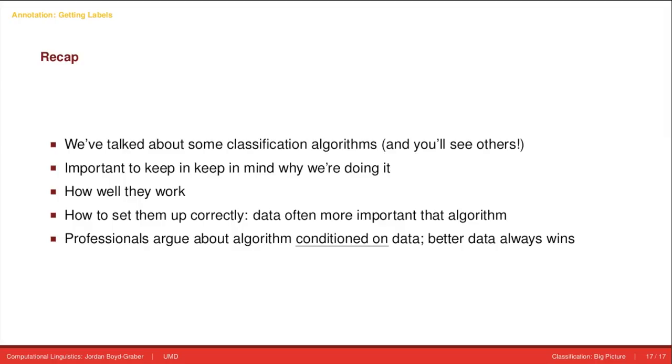You can have a really simple algorithm with fantastic data and beat a really complicated algorithm on mediocre data any day of the week. If you're ever forced to choose between algorithm and data, you should choose data. The reason that the big companies are flocking to deep learning algorithms is not that they have to choose. They've always had the best data. Because they have such rich data, they're able to take advantage of these deep learning algorithms.